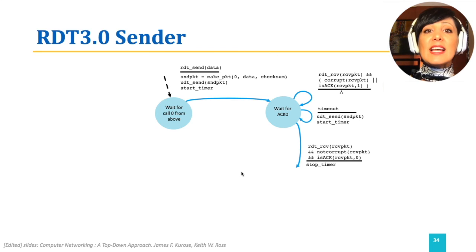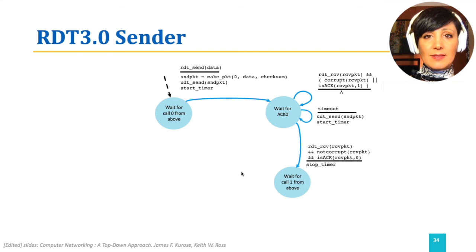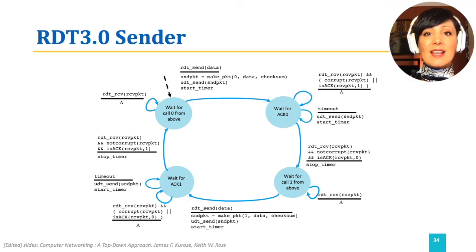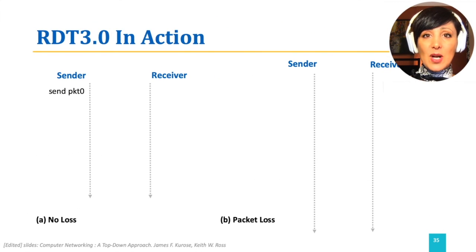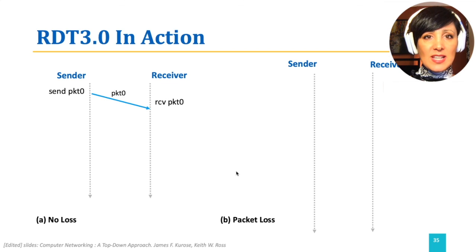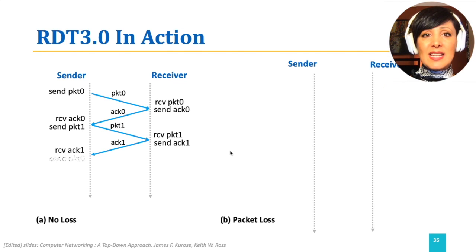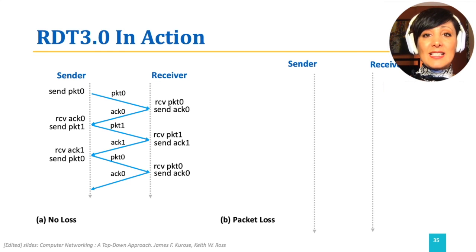The next state is the start of the same process for packet 1, which begins with receiving data from the upper layer and continuing the process similarly. If no loss happens, the flow of data will be packet 0 from sender to receiver, followed by ACK 0 from receiver to sender, then the same for packet 1, and this process repeats as long as there is data to send, with data packets sent every RTT.